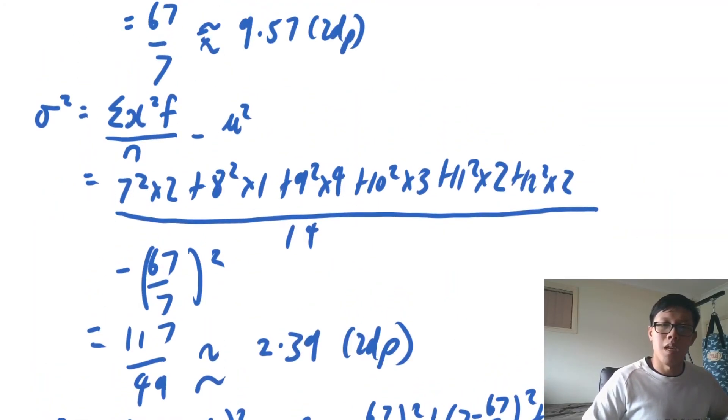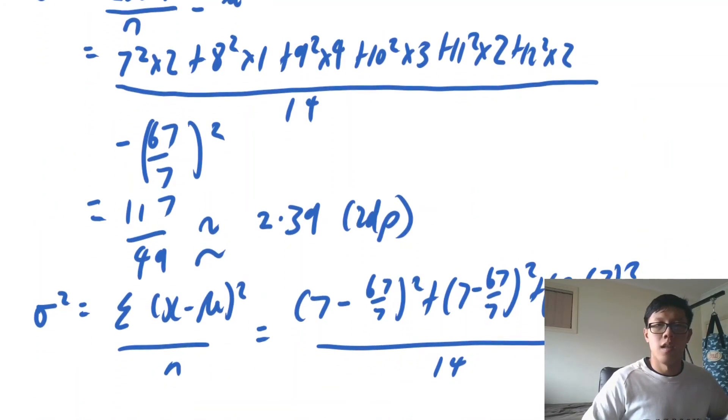And that blows up to a much bigger calculation. We've only done the first three values and there's still 11 more to go. So that's why we use this second formula instead.